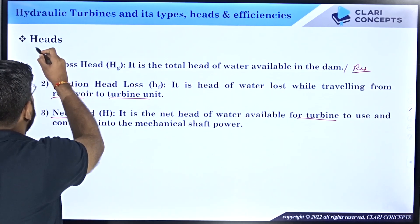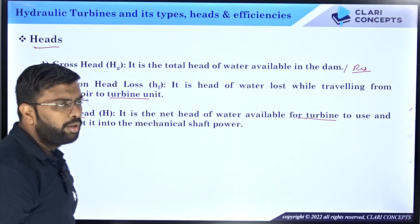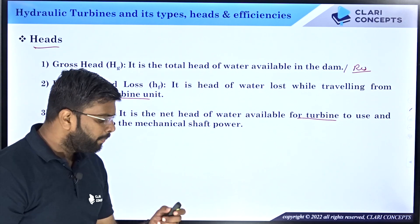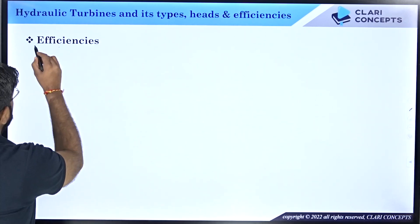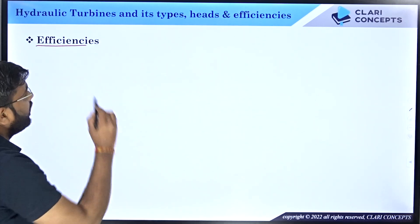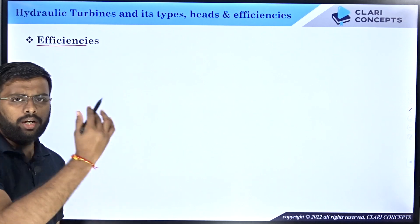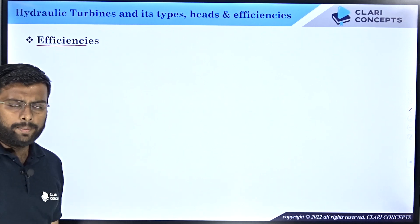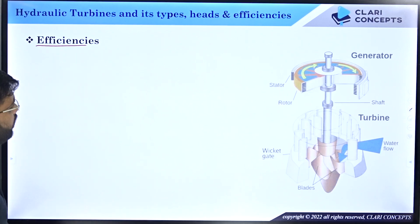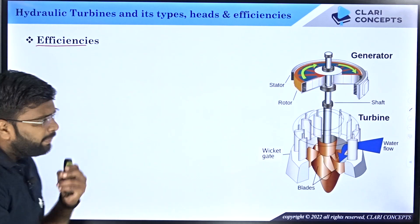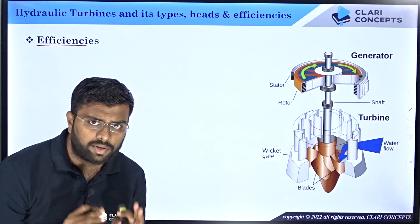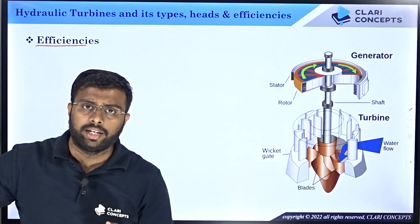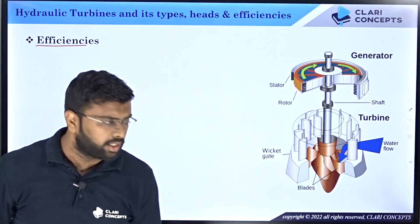Now we will see all the different efficiencies defined in this subject. First, let us understand the conversion process — from water energy to the shaft. We need to understand what happens at each stage of energy conversion.